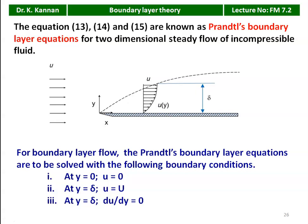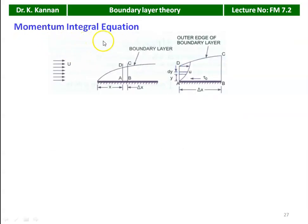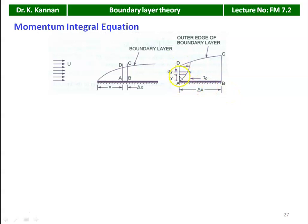We have three equations and three boundary conditions. Now we derive the momentum integral equation. We consider a small fluid element ABCD at a distance x from the leading edge with thickness δx. ABCD is enlarged for analysis. δx is the thickness of the fluid element. We take a small strip of thickness dy at a height y from y = 0, that is from the horizontal plate.